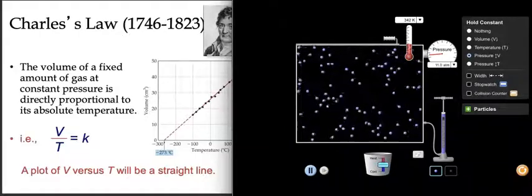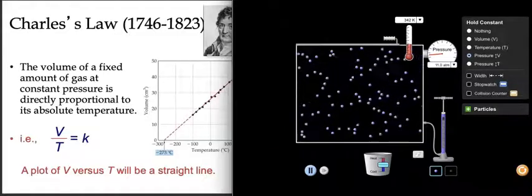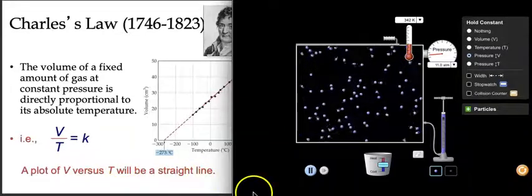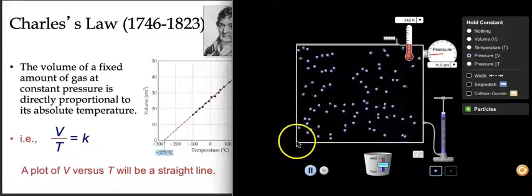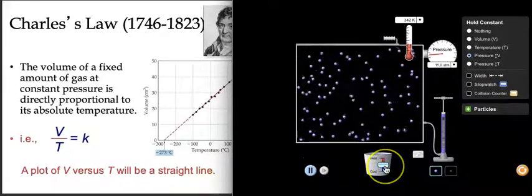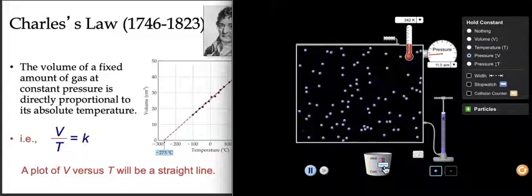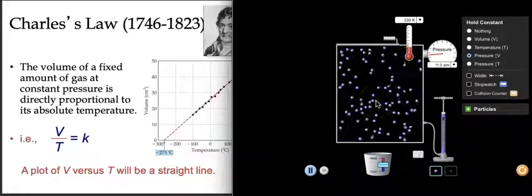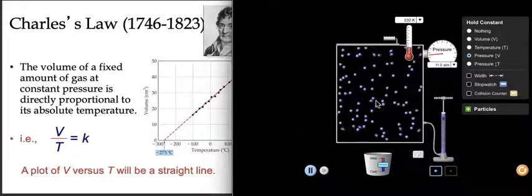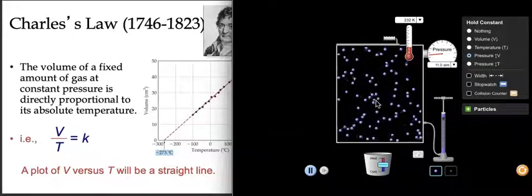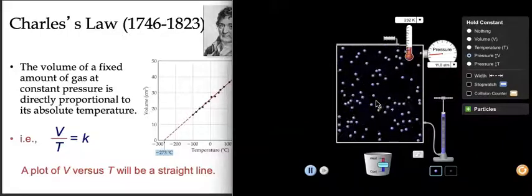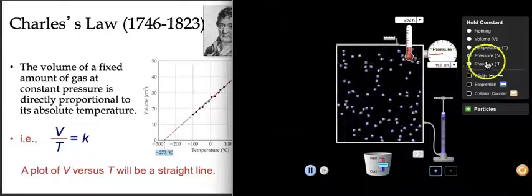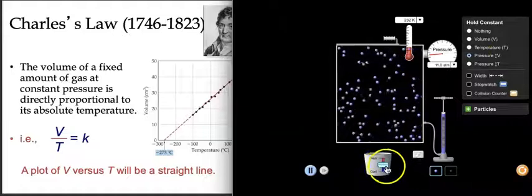You might have seen something like this: if you had a balloon filled with a whole bunch of gas and you put it in liquid nitrogen, you cool it down and the balloon gets smaller and smaller. That should make good sense in terms of what those particles are doing — if those particles have less kinetic energy, it would make sense that in order to keep the pressure constant, there has to be a corresponding lowering in volume.